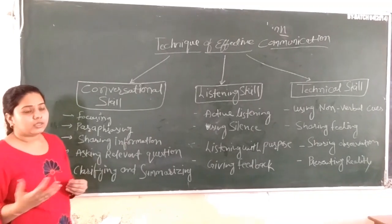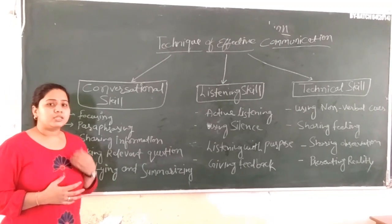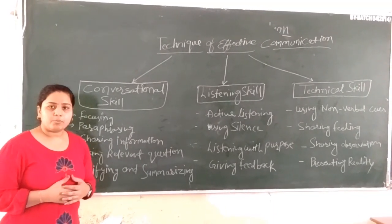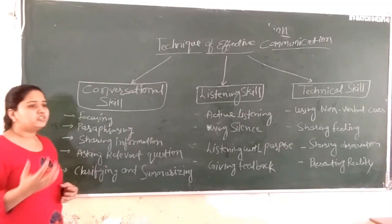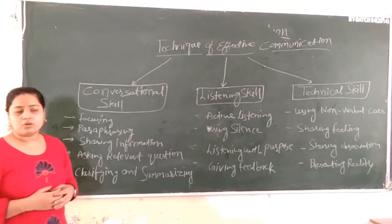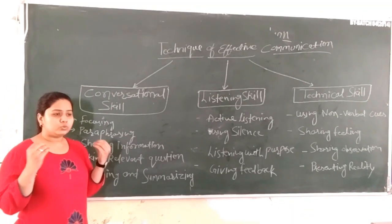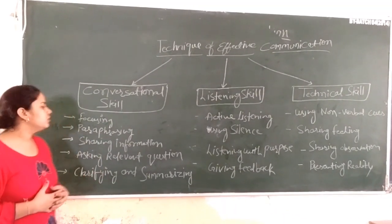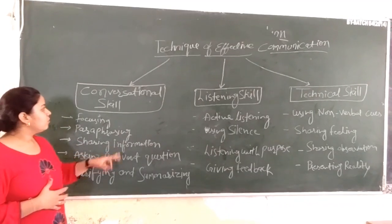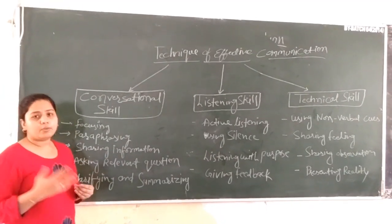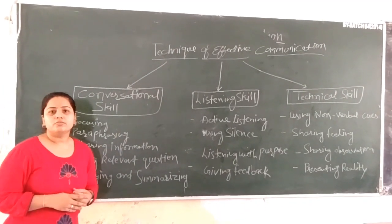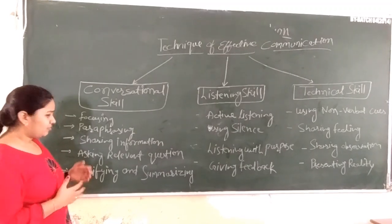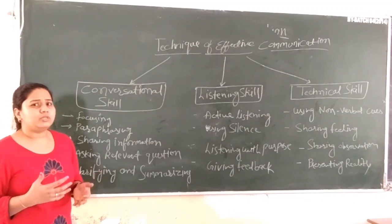If you have to know about some related thing, you have to know about it. The third is sharing information. If you want to share information about it, you can share it with two people.